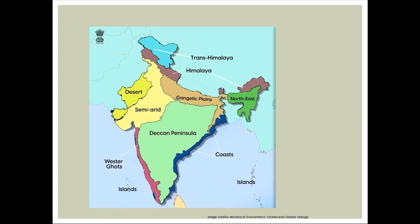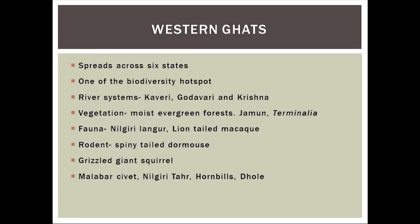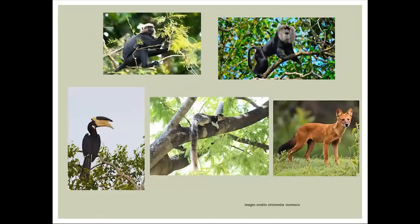One of the elements found here is the Nilgiri Langur — the black colored one with a golden brown fur on the head region. These are hunted for their skin and they are vulnerable under IUCN status.